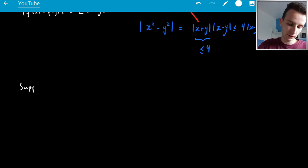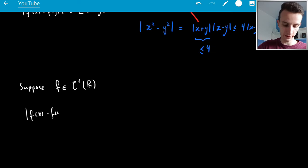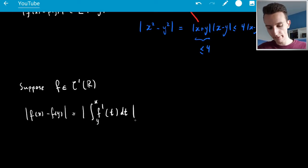so suppose F is in C1, so that means that its derivative is C0, its derivative is continuous. In this case, we'd have |F(X) - F(Y)| for X, Y in R, but this would be just equal to, by the fundamental theorem of calculus, just the integral of F'(T) dT from Y to X. I say whatever because we have absolute value, so it's equal to that, and now I can just put the absolute value inside, so it's less than or equal to the integral from Y to X,